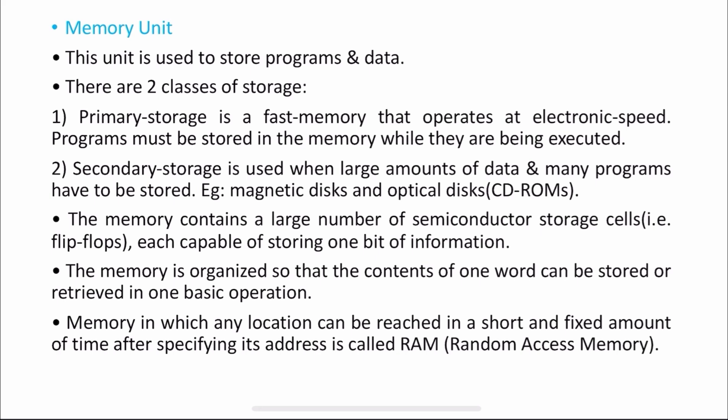The memory is organized so that the contents of one word can be stored or retrieved in one basic operation. The memory is organized in such a way that it can be retrieved whenever you want. Memory in which any location can be reached in a short and fixed amount of time is called random access memory — mainly primary memory.